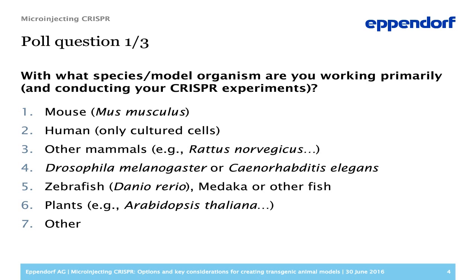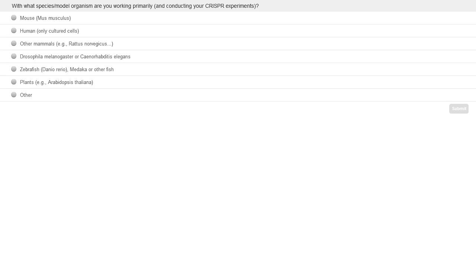The options are: number one, mouse; number two, human cells — of course, not zygotes; number three, other mammals, for example rats; four, Drosophila or C. elegans; five, zebrafish, medaka, or another fish; six, plant cells; or seven, another model organism. Please select the option that applies to you. We'll give you a few seconds to make your choice, and then we'll go to the results.